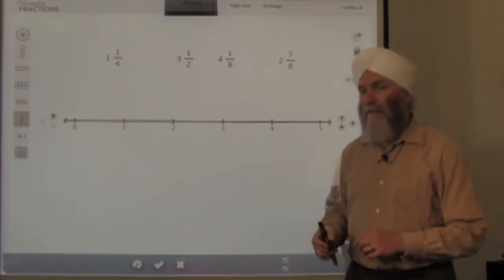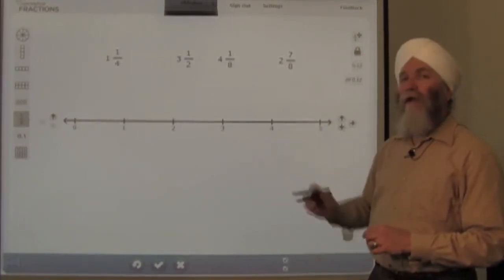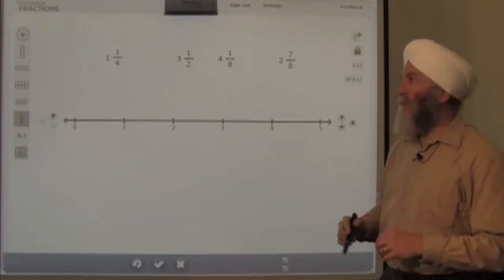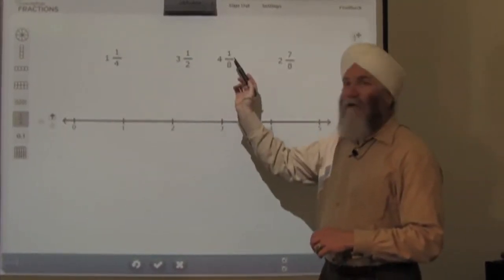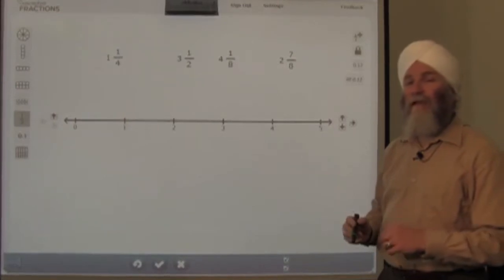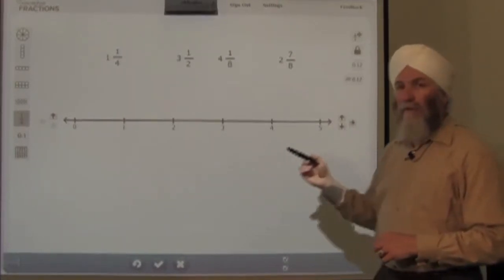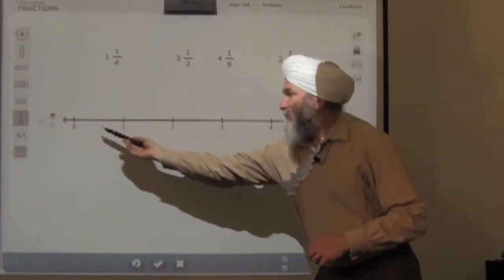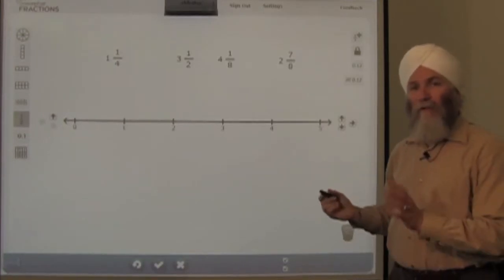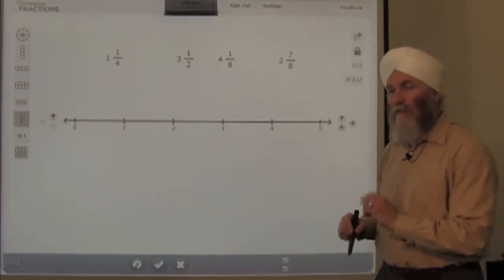Let's see how I have things set up. I've placed four fractions on the screen. They're mixed numbers: one and a fourth, three and a half, four and one eighth, two and seven eighths. And I've created a number line that moves between 0 and 5, with no other demarcations except those whole numbers.